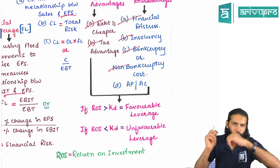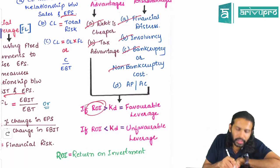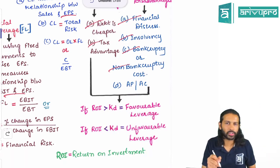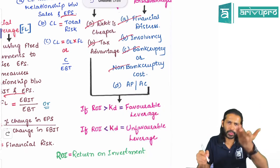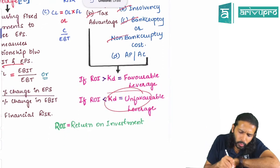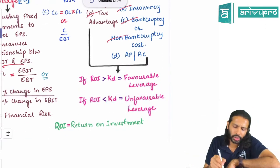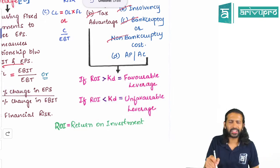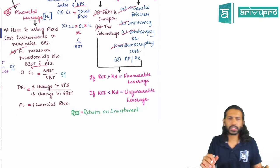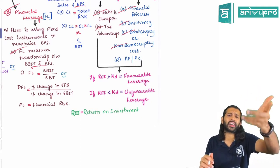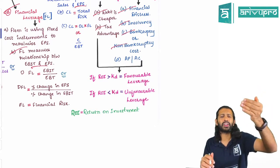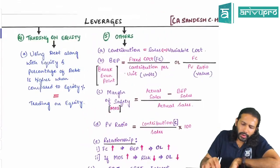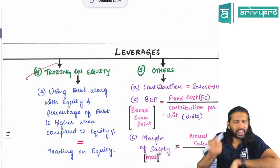To determine whether leverage is favorable or unfavorable, compare return on investment (ROI) with the cost of debt. If ROI is greater than the cost of debt, it is favorable leverage; the reverse is unfavorable leverage. ROI is generally taken as EBIT, calculated as return on capital employed — EBIT divided by capital employed.